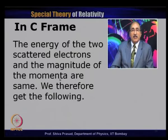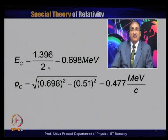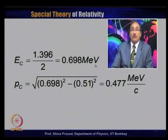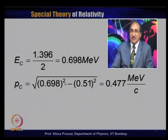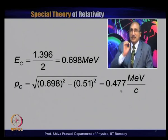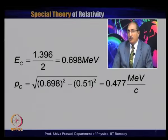So the incident proton must have a kinetic energy of at least 6m₀c² in the laboratory frame for this reaction p + p → p + p + p + p̄ to become possible. In summary, we have discussed several problems in the center of mass frame of reference and demonstrated how they become easier to solve. We also gave examples of the use of four-vectors and their invariant length.